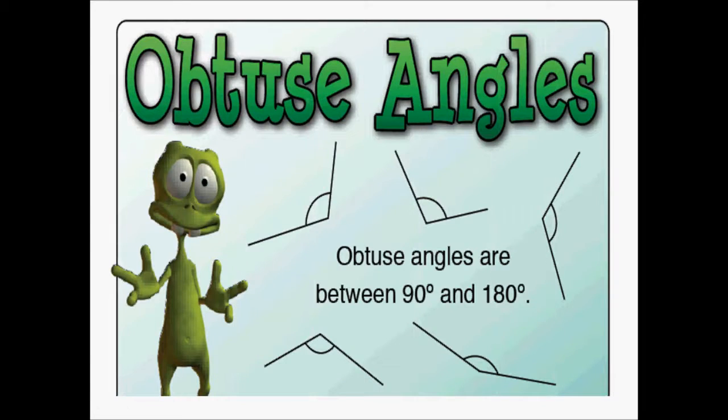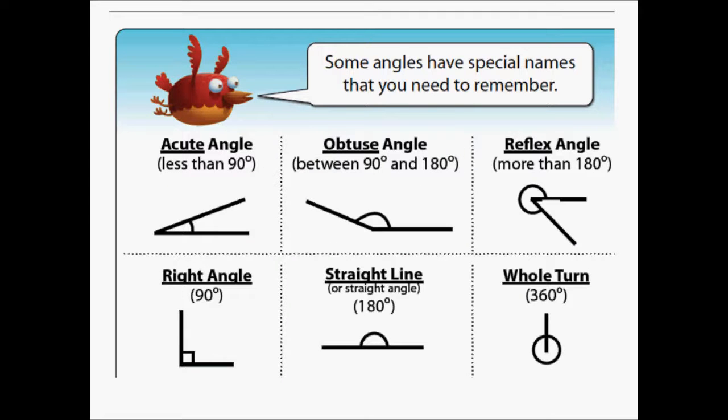Finally, we have the obtuse angles. Obtuse angles are between 90 degrees and 180 degrees. As we could see through all of them, they have different degrees and according to their degrees they are named.